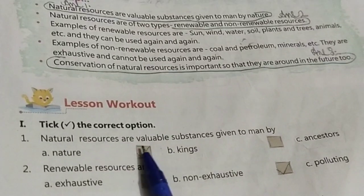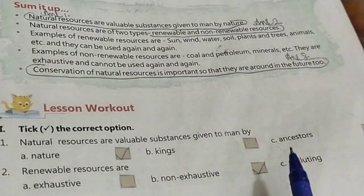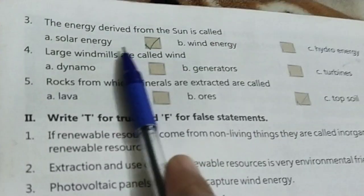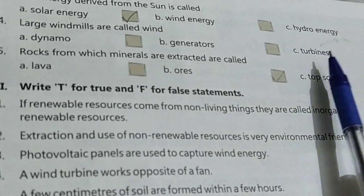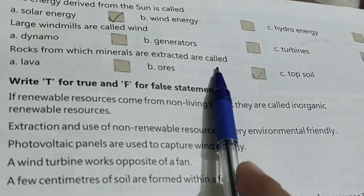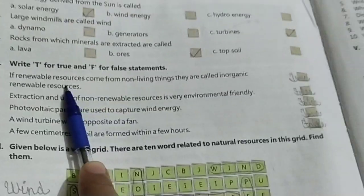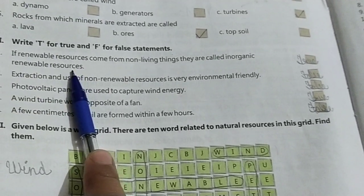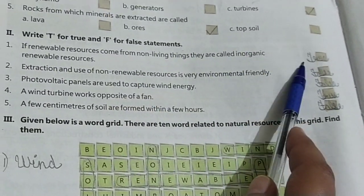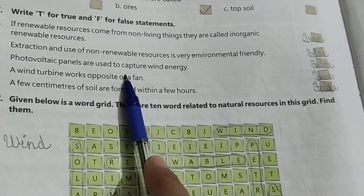To conserve wildlife, we should not kill wild animals like tigers, lions, leopards, and elephants. Now moving to exercises: Natural resources are valuable substances given to man by nature. Renewable resources are non-exhaustible. The energy derived from the sun is called solar energy. Large windmills are called turbines. Rocks from which minerals are extracted are called ores. Write True or False: If renewable resources come from non-living things, they are called inorganic renewable resources - True.